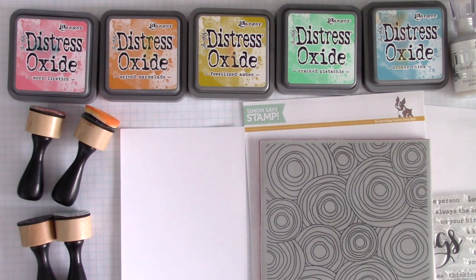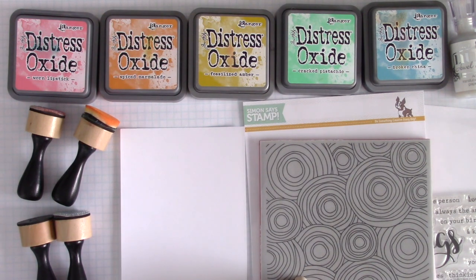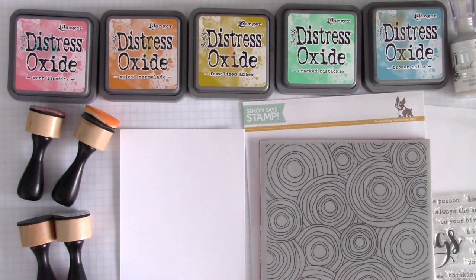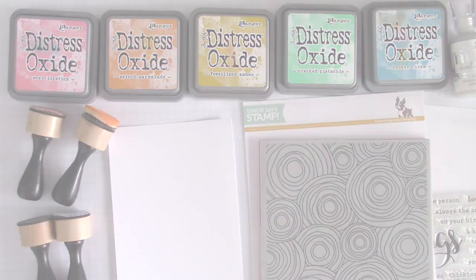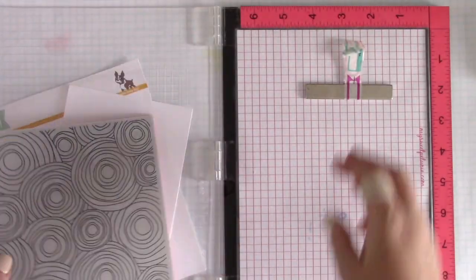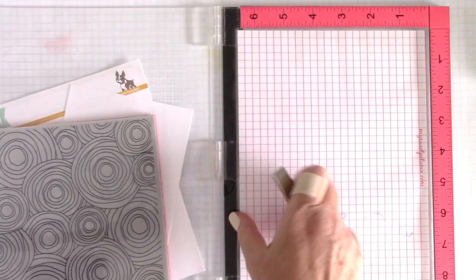I happen to have a rainbow of Distress Oxide inks and I am really loving playing with these inks. I also have a Simon Says Stamp background stamp, some smooth white card stock, and an ink blending tool. I am going to show you how I made this rainbow background following the stamp pattern.